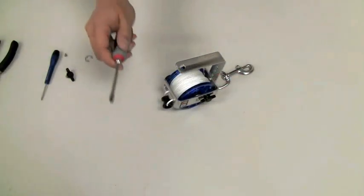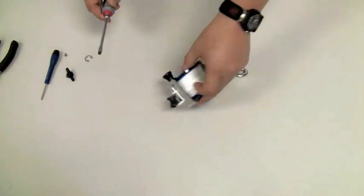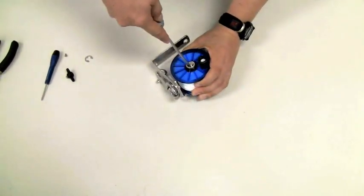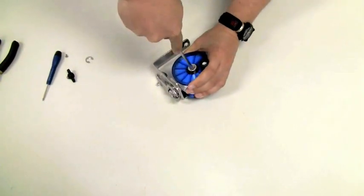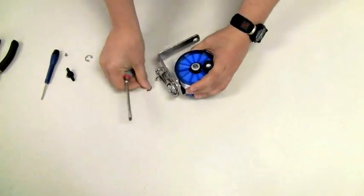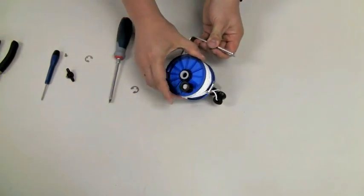To begin, take the flat head screwdriver and use it to pry the existing C-clip from the side of the safety reel. At this point, remove the spool.